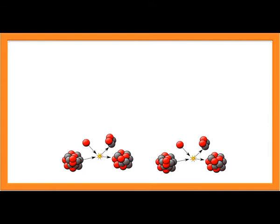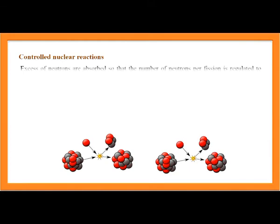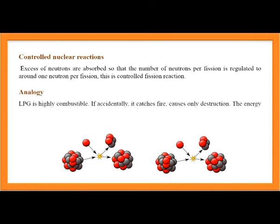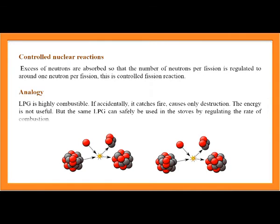Controlled nuclear reactions: Excess neutrons are absorbed so that the number of neutrons per fission is regulated to around one neutron per fission. Analogy: LPG is highly combustible and causes destruction if it catches fire, but the same LPG can be safely used in stoves by regulating the rate of combustion.